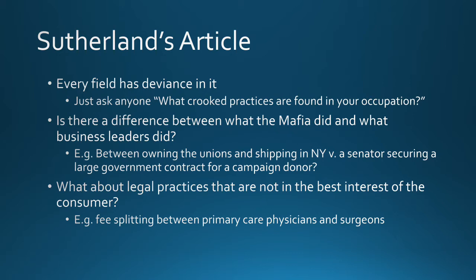Sutherland argues if every job has crooked practices in it, there's a lot of deviance that we're not really measuring and looking at. He goes on to argue that there's not really a huge difference between what the Mafia did and what business leaders do. For example, the Mafia owned trade unions and controlled a lot of the shipping in New York. If they didn't get the contracts they wanted, they would shut down the construction or garbage industry, or just close the ports of New York, which could have ripple effects on the whole U.S. economy. Is that really any different than a senator telling a campaign donor, donate money to my campaign and I'll make sure we hire your construction company when we build this road?